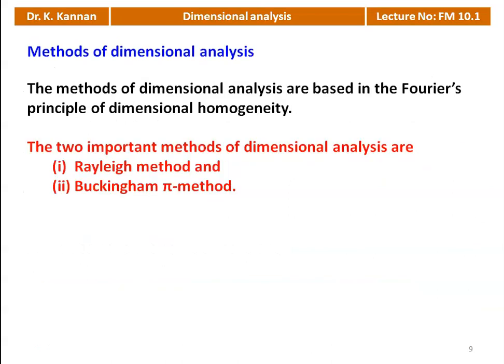The methods of dimensional analysis are based on Fourier's principle of dimensional homogeneity. There are two methods used in engineering for dimensional analysis: one is Rayleigh's method, and another is the Buckingham Pi method. Here we explain both, and in the next lecture we will take some problems on each method so you can understand the methodology.